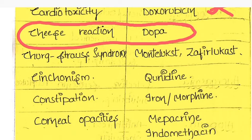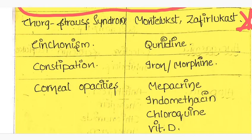Cinchonism is caused by quinidine. And constipation is caused by iron or morphine.